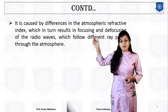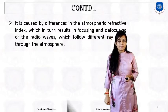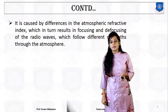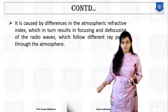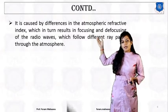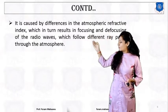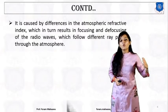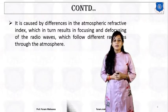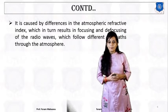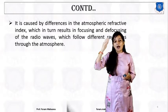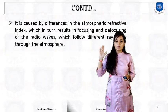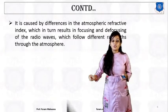It is also caused by differences in the atmospheric refractive index, which results in focusing and refocusing of radio waves. When a signal is traveling from a lower refractive index to a higher refractive index, the signal is going to be refracted. And if the signal is traveling from a higher refractive index to a lower refractive index, the signal is going to be reflected — similar to the concept of total internal reflection in optical fiber cable.